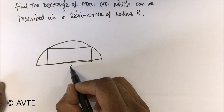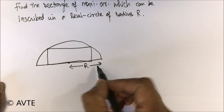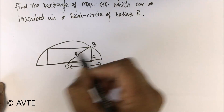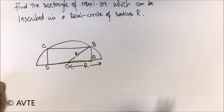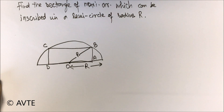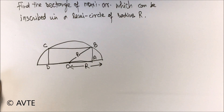Obviously, if this is the radius and this is also the radius, you will place one side of the rectangle along the diameter of the semicircle as the base. The rectangle is placed at the center — the midpoint of the length will also be the center of the semicircle.